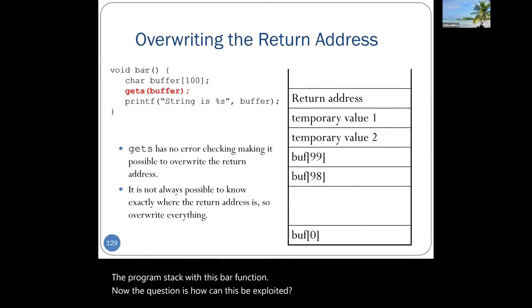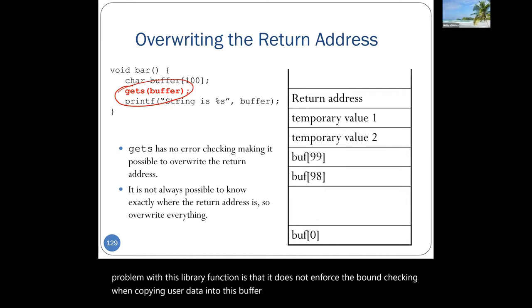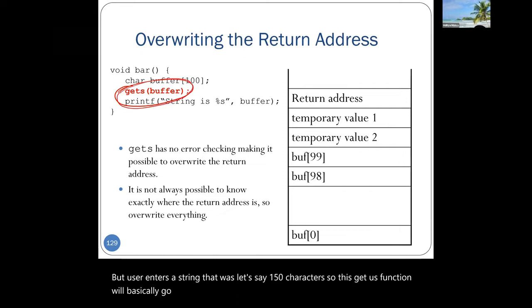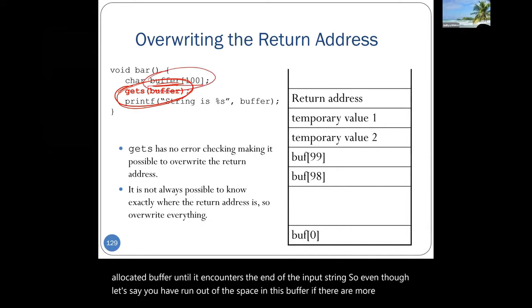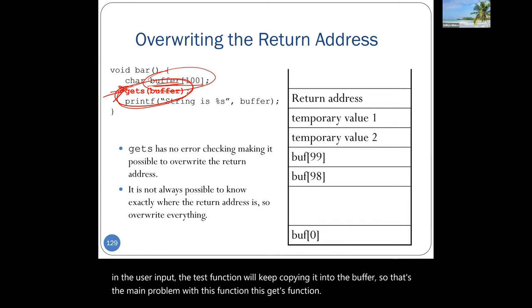The main problem in this code is with the gets() function. The problem is that it does not enforce bound checking when copying user data into the buffer. So if your buffer is only 100 characters but the user enters a string of 150 characters, the gets() function will keep copying characters from the user input into the buffer until it encounters the end of the input string, even after running out of space. That's the main problem.